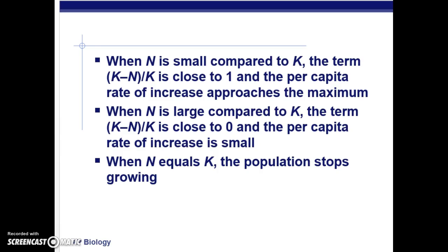When N is small compared to K, the term (K minus N)/K is close to 1 and the per capita rate of increase approaches the maximum. When N is large and the population is getting close to the carrying capacity, (K minus N)/K approaches zero and the per capita rate of increase becomes small. When N equals K, the population stops growing entirely.